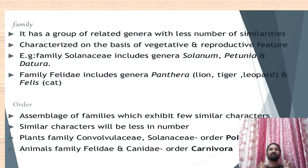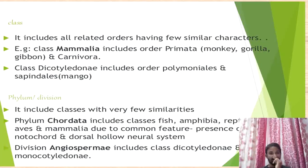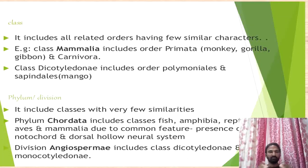Coming to orders — an assemblage of families exhibiting a few similar characters represents the order. For example, Convolvulaceae and Solanaceae are placed in the order Polemoniales. Coming to class — it includes all related orders having a few similar characters. The class Mammalia includes the order Primata (monkey, gorilla, gibbon) and Carnivora. The class Dicotyledonae includes orders like Polemoniales, Sapindales, etc. Different orders constitute a class, as orders that have very similar characters are kept in one class.